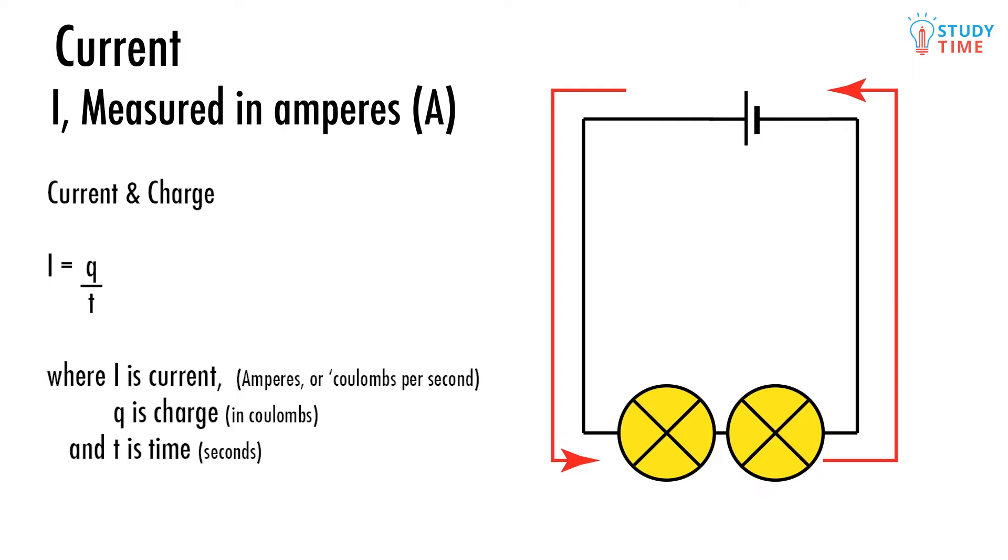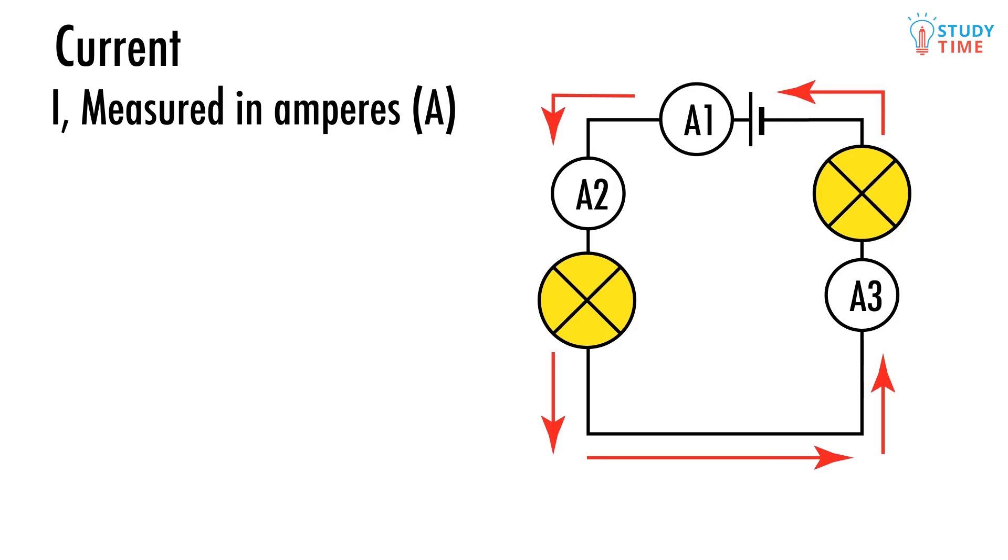The next question we want to answer is this. What's the current going to be through each of our two bulbs and what does that tell us about the total current? We can measure current by sticking a device called an ammeter in any circuit anywhere we like. Here's what it might look like and this is what it might tell us. At point A1 the measure is 2 amps and remember this means the rate of charge flow is 2 Coulombs flowing past per second. At A2 it's 2 amps and at A3 it's 2 amps. That means the current flowing at the battery is exactly the same as the current flowing past the first bulb and also the same as the current flowing past the second bulb.